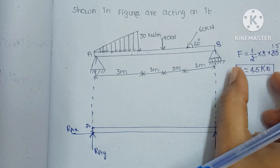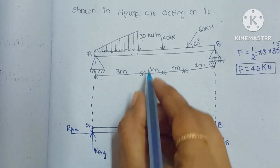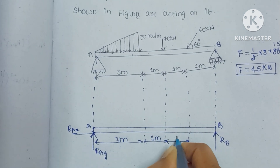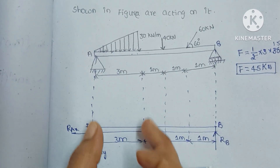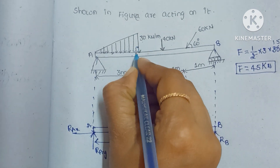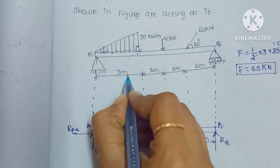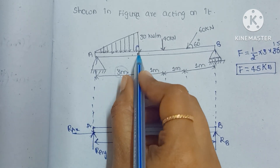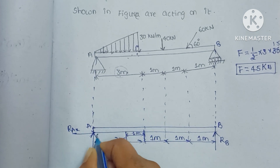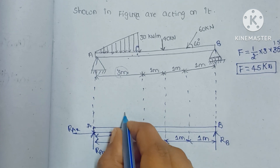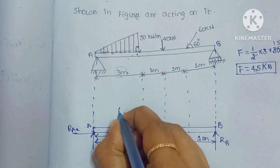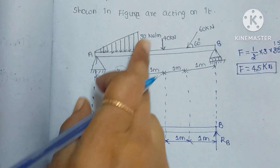This 45 kN force acts within the 3-meter span at the centroid of the triangular load. The centroid is at L/3 from the maximum load side. So L/3 = 3/3 = 1 meter from the maximum end. Taking from the other end, the load acts at 1 meter from that side — confirming the equivalent point load of 45 kN acting at 2 meters from A.